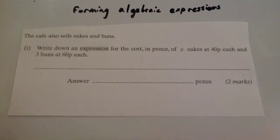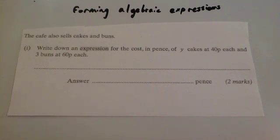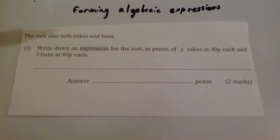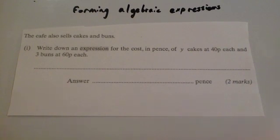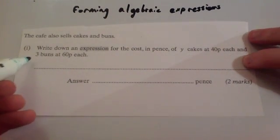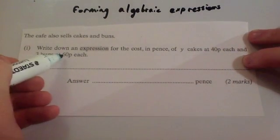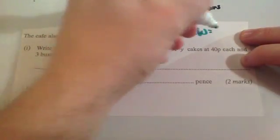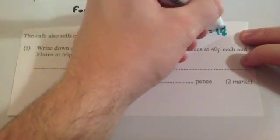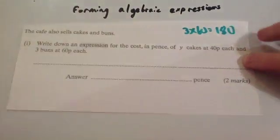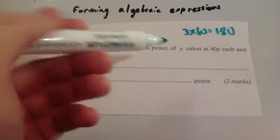Here's another question. A cafe sells cakes and buns. Write down an expression for the cost in pence of y cakes at 40 pence each and 3 buns at 60 pence each. The buns are quite straightforward — 3 buns at 60p: 3 times 60 would be £1.80, or 180 pence.